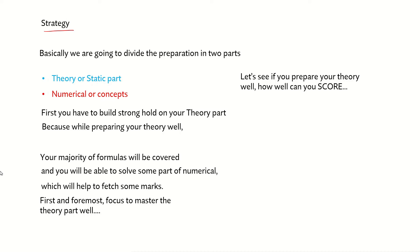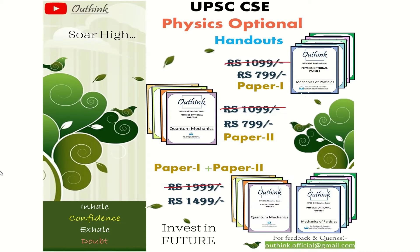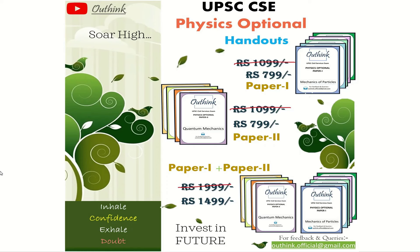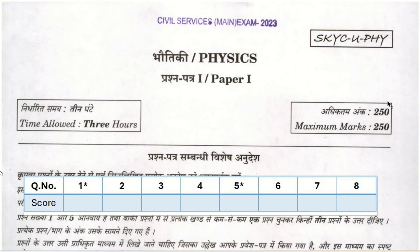Now we will see the implementation part of the strategy — how you will get 300 plus. We'll apply this to last year's paper, 2023. Many of you are requesting handouts, so they are available — you can buy them in parts or both at once. There is a link in the description box. Use your time smartly and prepare your theory well.